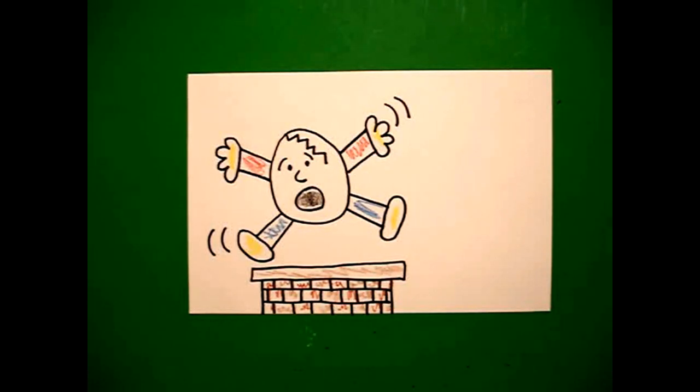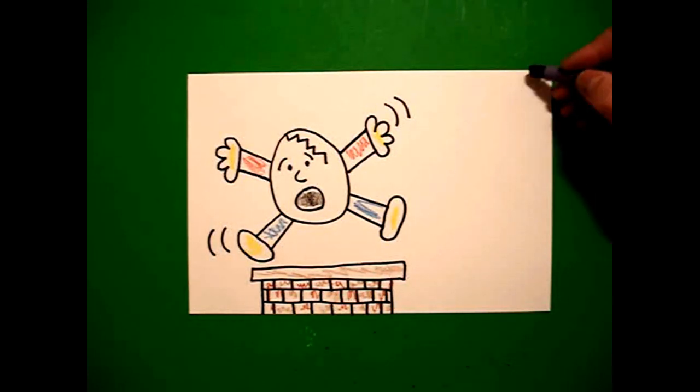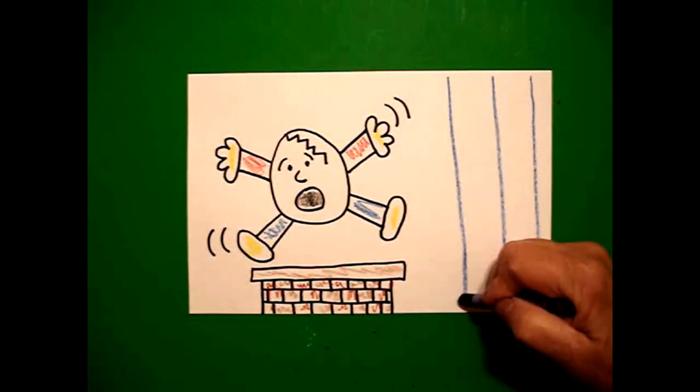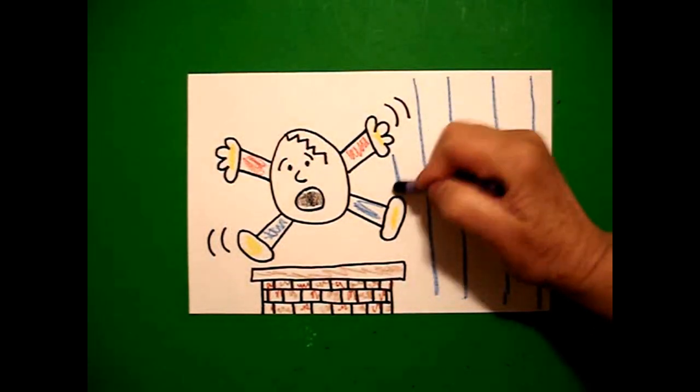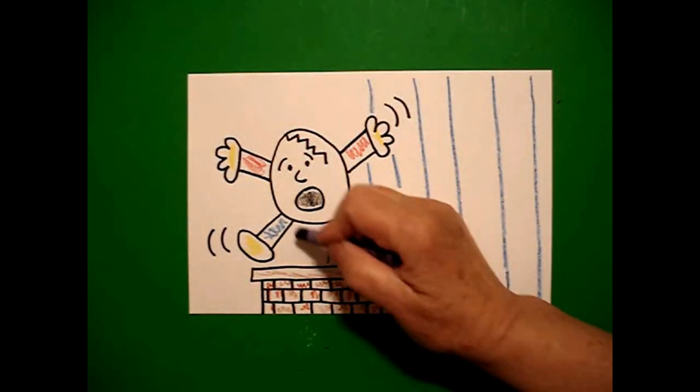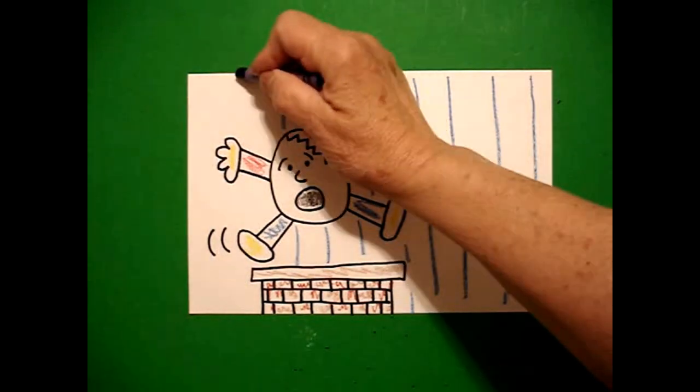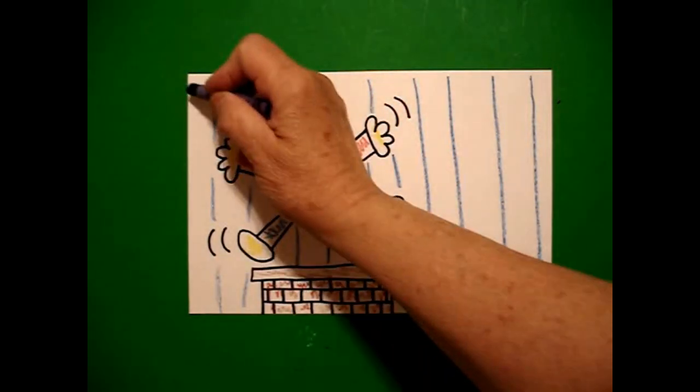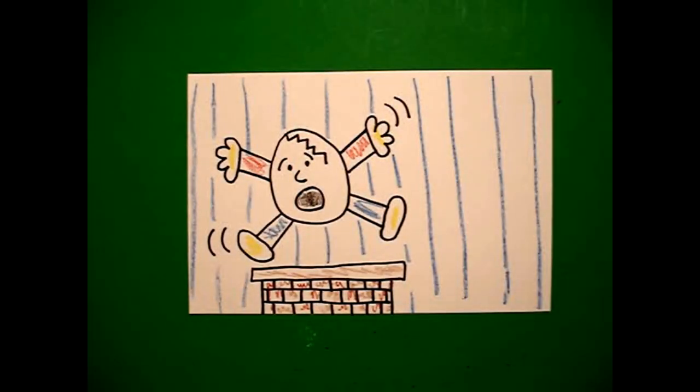Now, just to fill in the background with a little bit of color, I take my blue crayon and I draw straight lines all the way across. Now, don't draw through your picture. Jump over all the way. Keep going all the way. Okay, there we go. Let's see what Humpty looks like all colored in.